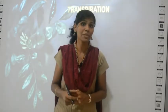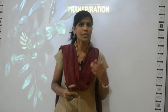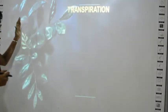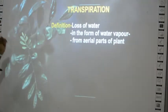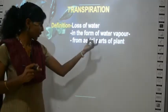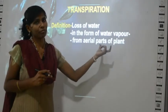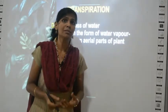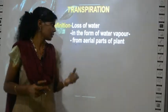Where does transpiration happen — in the environment, in humans, or in plants? Transpiration happens only in plants. So what is it? Transpiration is the loss of water in the form of water vapor from the aerial parts of a plant.